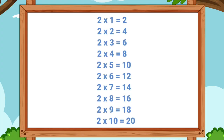Let's sing the table one more time. 2 ones are 2. 2 twos are 4. 2 threes are 6. 2 fours are 8. 2 fives are 10. 2 sixes are 12. 2 sevens are 14. 2 eights are 16. 2 nines are 18. 2 tens are 20.